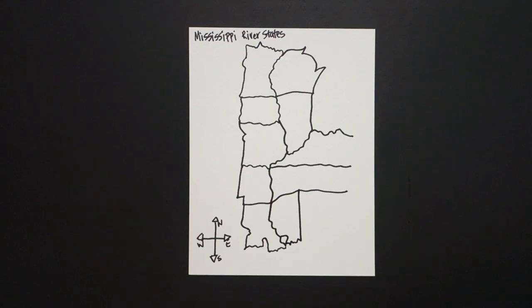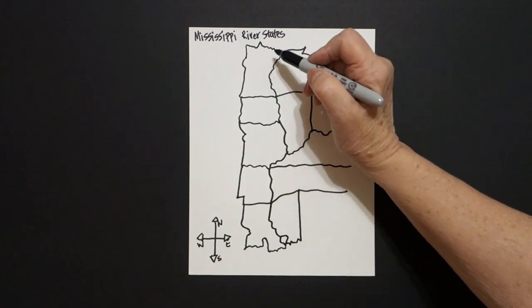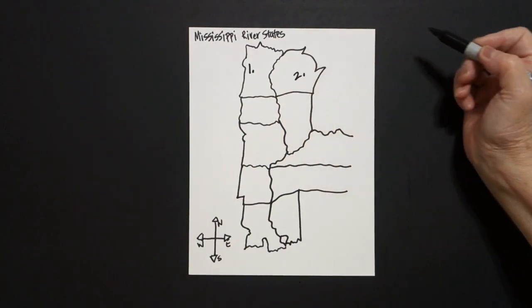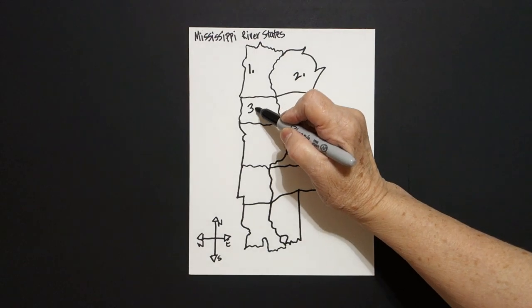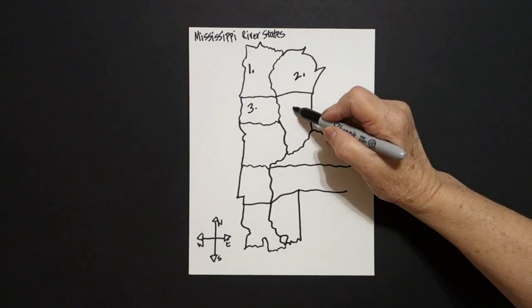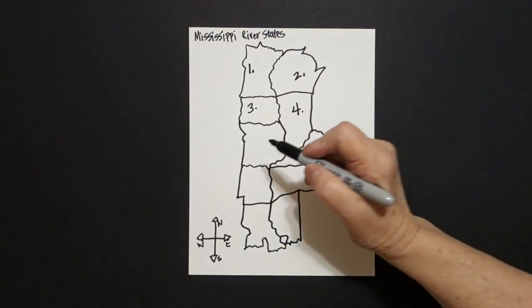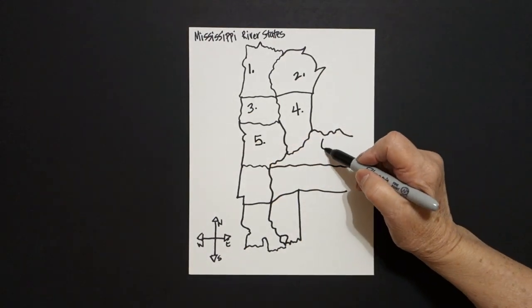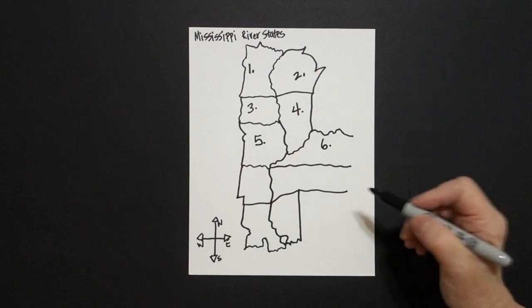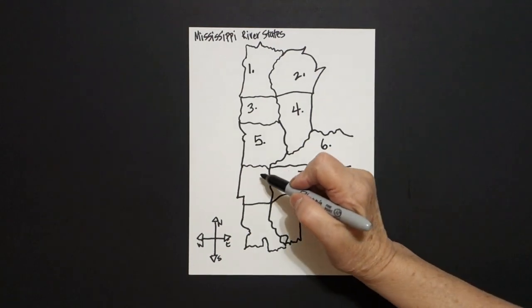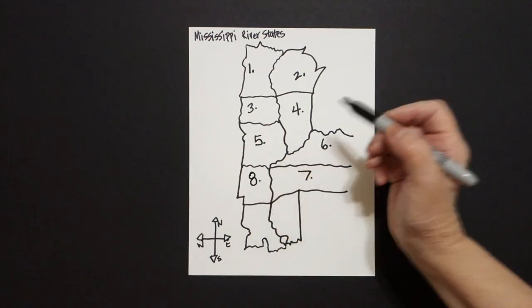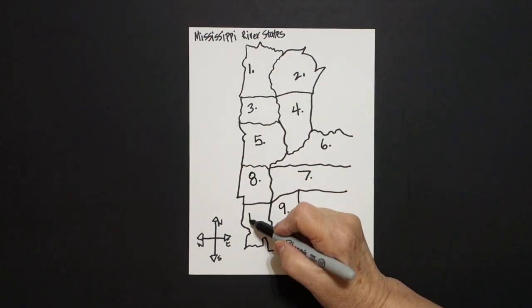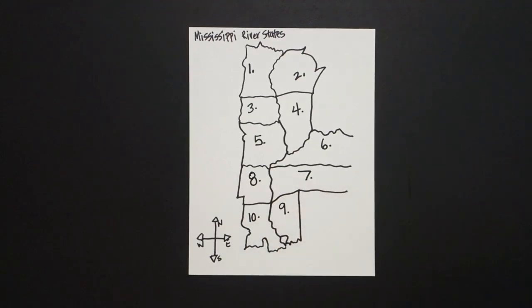Now we're going to number these. This is one, two, three, four, five, six, seven, eight, nine, and ten.